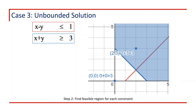The second constraint is x plus y greater than or equal to 3. Testing the point (0, 0): 0 plus 0 greater than or equal to 3 is not satisfied, so the feasible region is not the side towards (0, 0). We consider a point in the opposite direction, (2, 3). Putting x equals 2 and y equals 3 gives 2 plus 3 greater than or equal to 3, which is satisfied. So the feasible region for the second constraint is the area from the second line towards the point (2, 3), shown in blue.